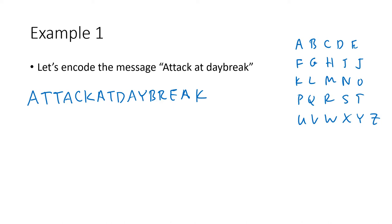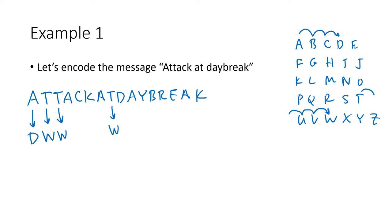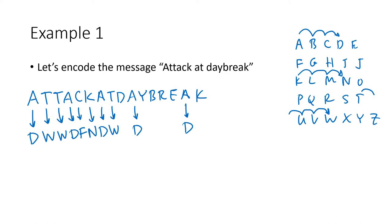From A, three spaces forward gives us D. So in the encrypted message, A gets replaced by D. Next, T gets replaced by W. It's the same rule for each letter, so all the T's in the message get replaced by W's. Similarly, all the A's get replaced by D's. C gets replaced by F. K — three spaces forward — gets replaced by N, and there's another K that also becomes N.